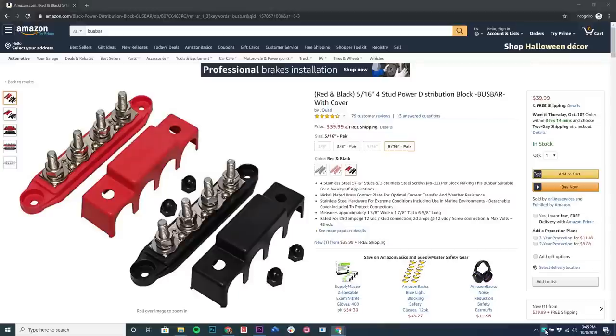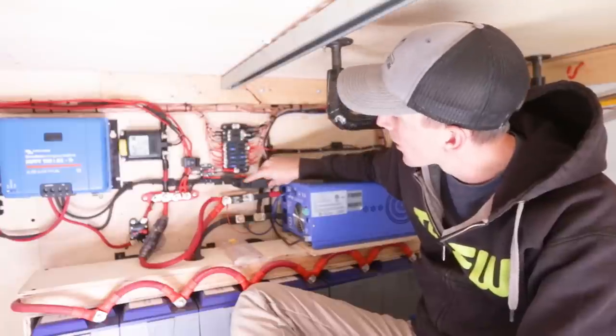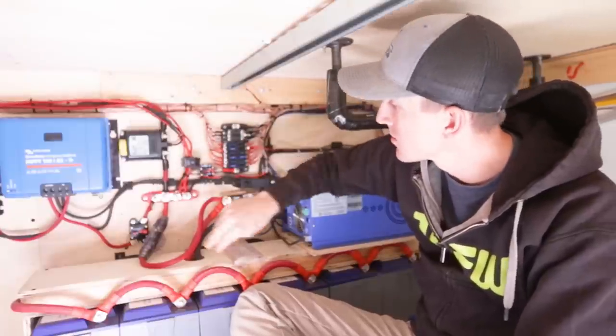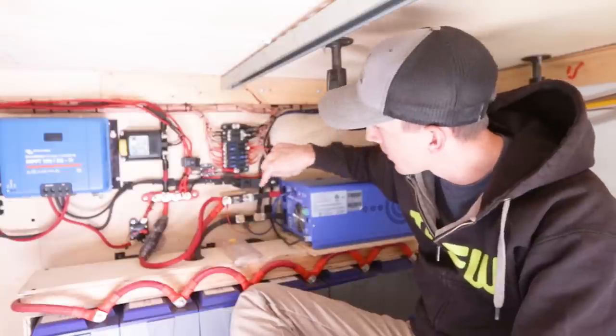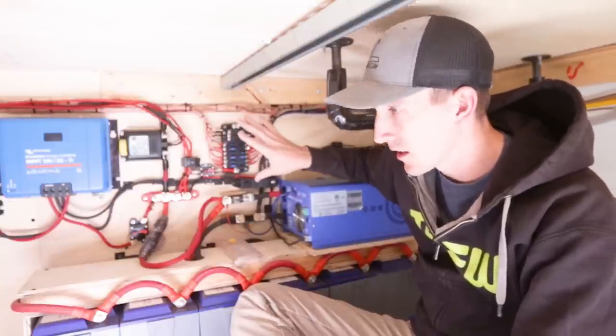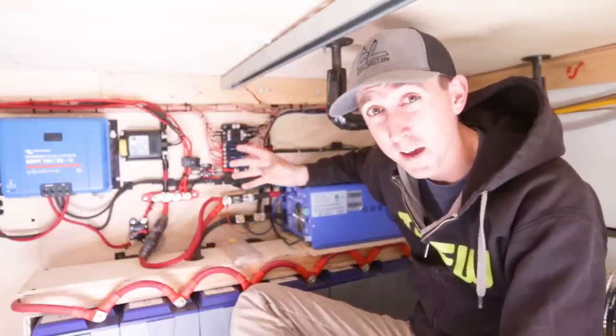But why am I asking you to build your own? I'm well aware that you can buy bus bars on Amazon and we even had them in our sprinter that we built out two and a half years ago. We had our negative bus bar here, positive bus bar here, a fuse there, fuse there, fuse there, a shunt there. It works and it's operational, it was just messy.